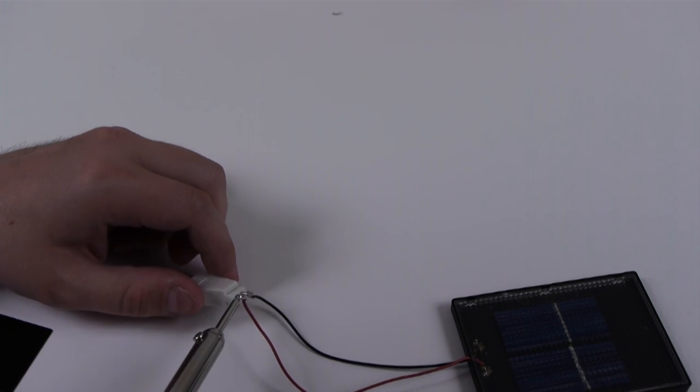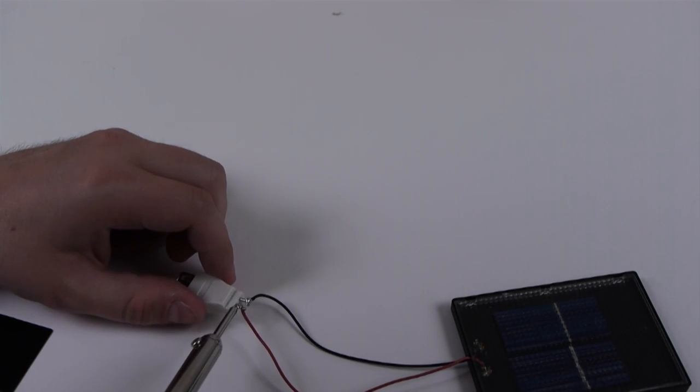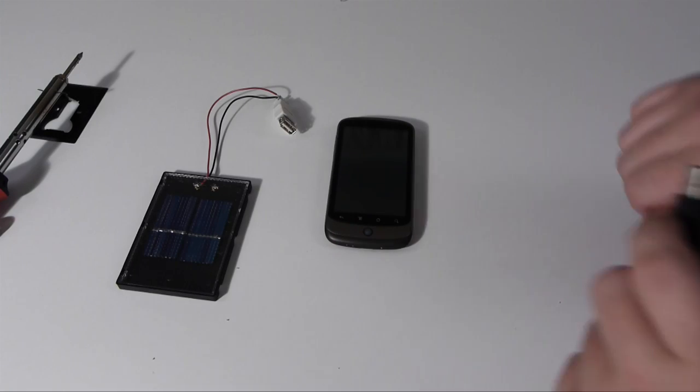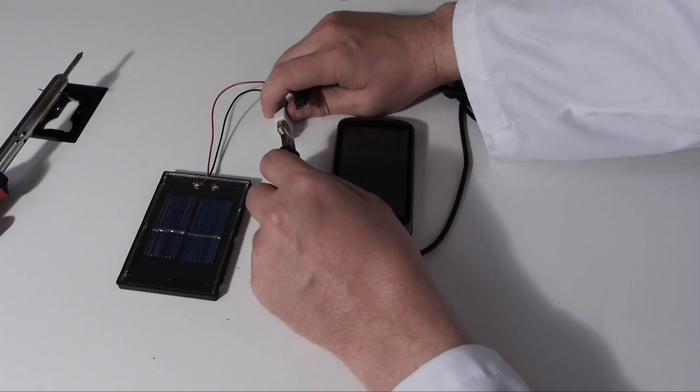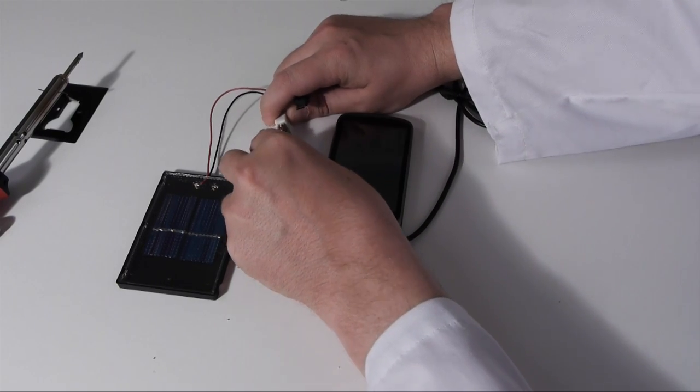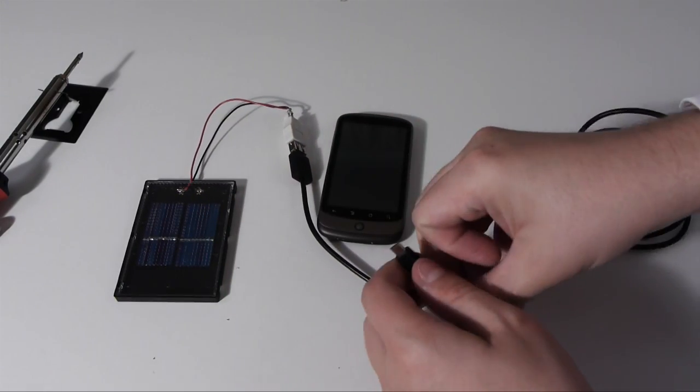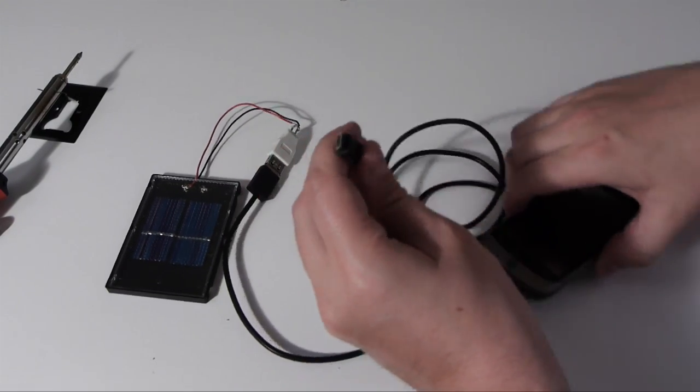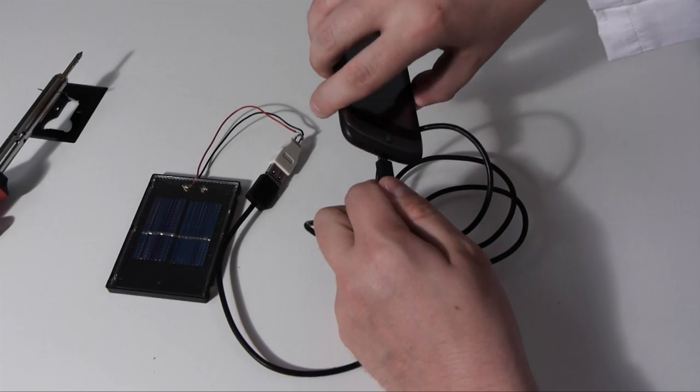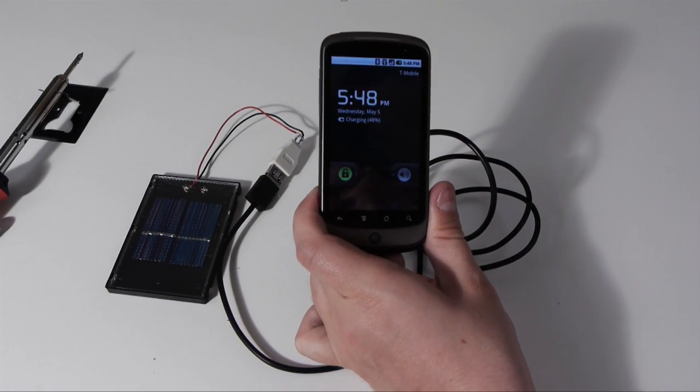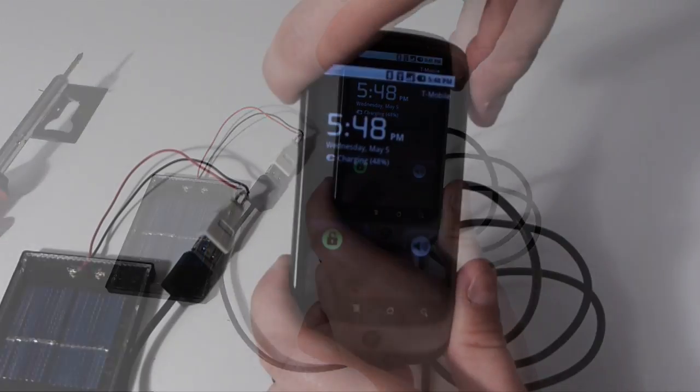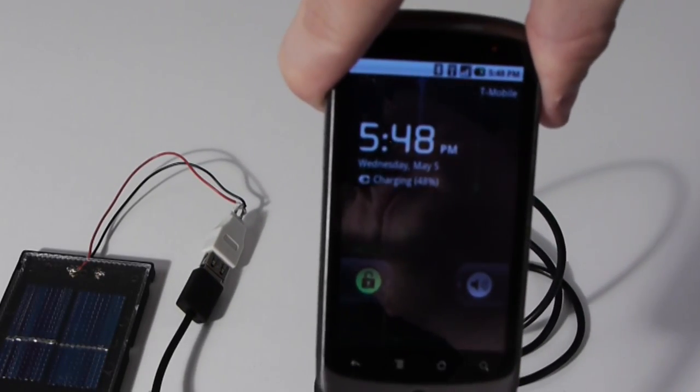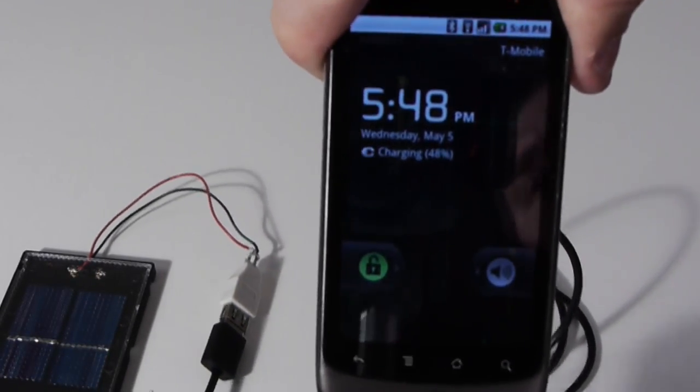Once you've got your wires hooked up, you're ready to go. So let's test it out. Now we've got our connector soldered into the solar panel. You can plug in a USB device and then hook it up and see what happens here. And we get charged. As you can see there.